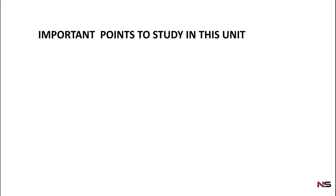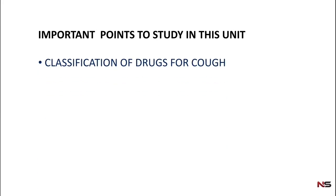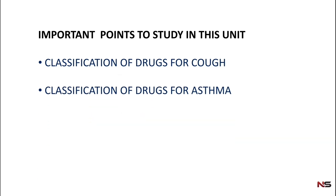Before starting the MCQ, I will tell you the important points to study in this respiratory system unit. First is the classification of drugs used for cough. Next is the classification of drugs used for asthma. And the last point is the mechanism of methylxanthines. These three points are very important in this respiratory system.